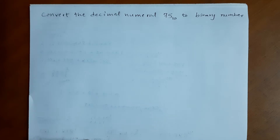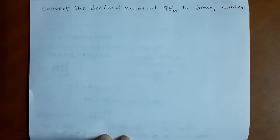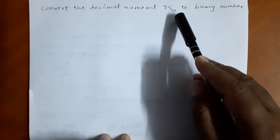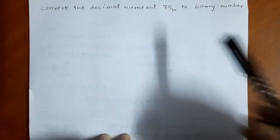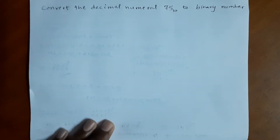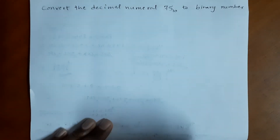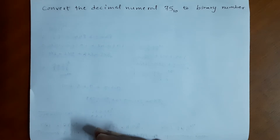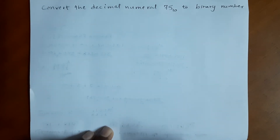So now I will start today's topic. Here we have to convert the decimal number 75 — the subscript 10 is written to denote that the base is 10. If the base is not written, you should still understand it is a decimal number. We have to convert it into binary. In binary we have only two digits, 0 and 1. To change into binary we need to divide by 2, because dividing by 2 always gives a remainder of 0 or 1, which gives us the binary digits.